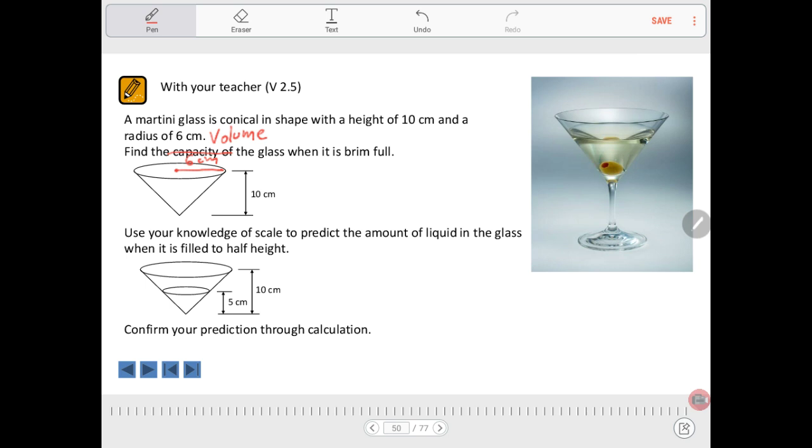Volume and capacity, as you'll discover in later videos and may already have an understanding of, are very closely linked. Often we need to find a volume before we can calculate a capacity. But we'll talk more about that later. For now, let's just find the volume of this martini glass. We're not even going to worry about this bit down here, just the top one.